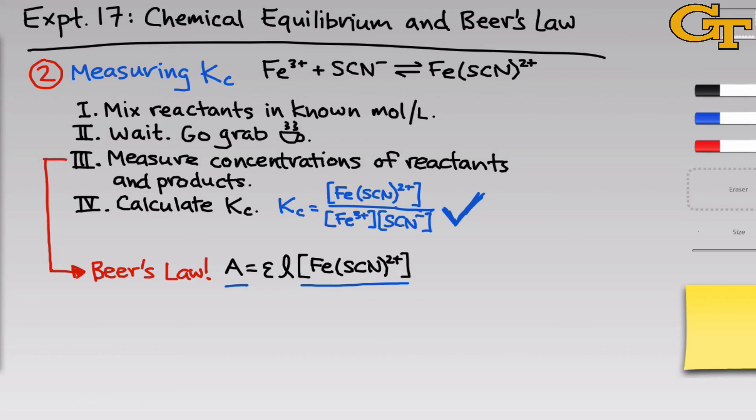The epsilon is what's called the molar absorptivity, and it's really the proportionality constant that tells us how much a mole of Fe(SCN)2+ actually absorbs. We'll measure this in part A. To do that, we'll generate a curve that shows the absorbance as a function of the Fe(SCN)2+ concentration, which will be known. The curve we'll get will be a line, and the slope of this line is the value of epsilon.